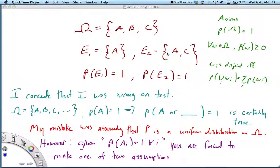After class you showed me this counter-example where you defined Ω as the set containing a, b, and c. You defined event 1 as just {a}, event 2 as {a,c}, and said you can assign these probabilities equal to 1 without violating any axioms of probability.